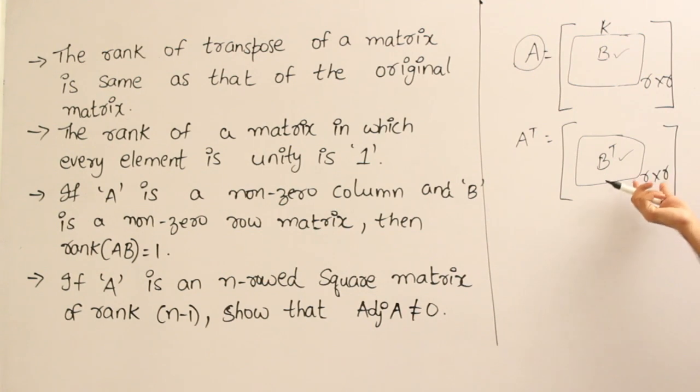and since its determinant is not equal to 0, we are going to get it. Since it is there, it is going to be here. Now, you might argue that what if A transpose has a bigger sub-matrix and so its rank might be greater than